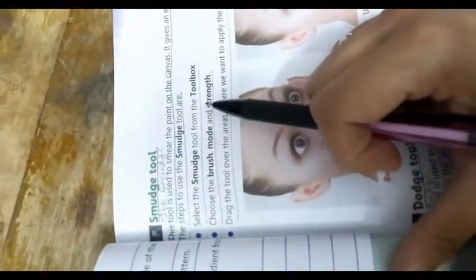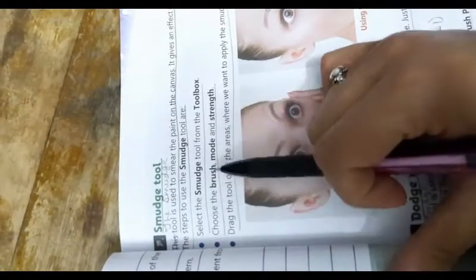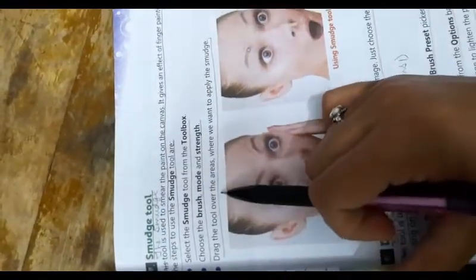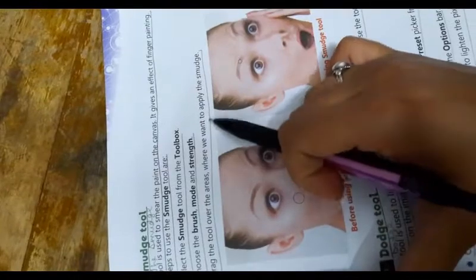The steps to use smudge tool are select the smudge tool from the toolbox, choose the brush, mode and strength, drag the tool over the areas where we want to apply the smudge.